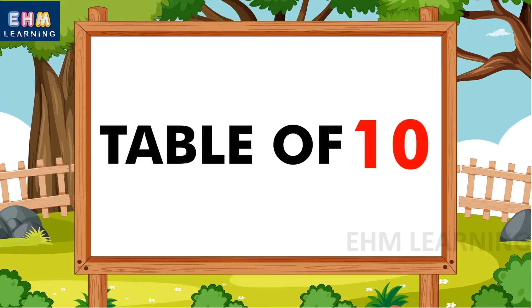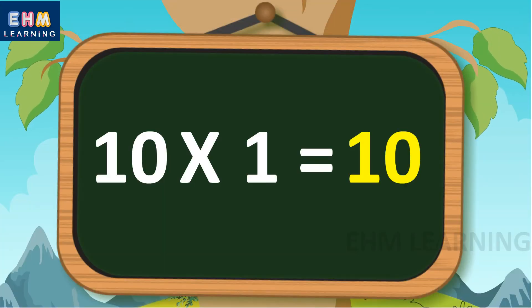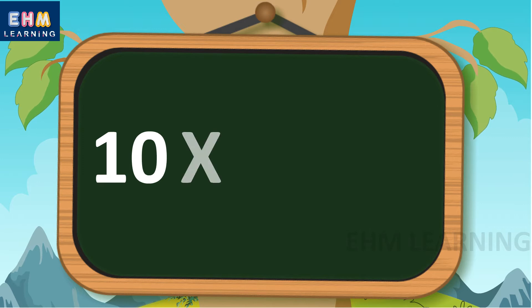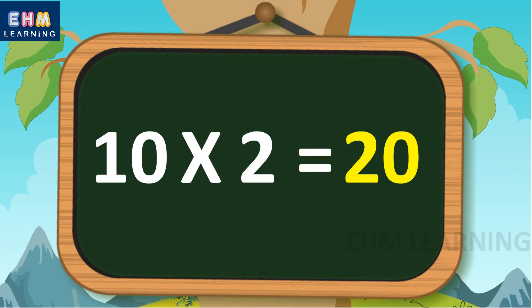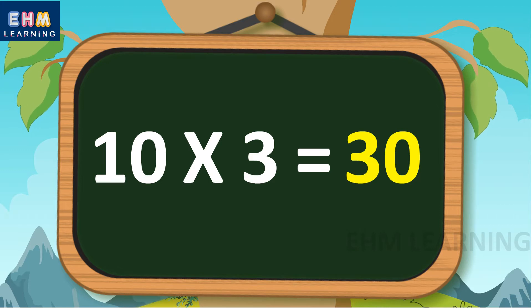Hello Children. Today we will learn the Table of Ten. 10 1s are 10, 10 2s are 20, 10 3s are 30.